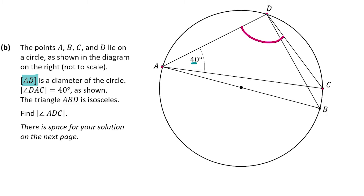Using the information given, we're going to fill out any angles we know to help us work out angle ADC. First, AB is a diameter, and we know that any angle in a semicircle that touches the outside of the circle is 90 degrees. So angle ADB is 90 degrees.